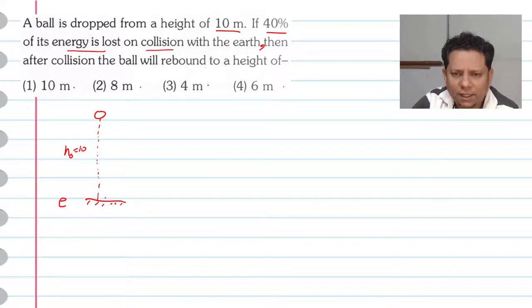the coefficient of restitution is e. On the same vertical line, the ball rises to height H1.